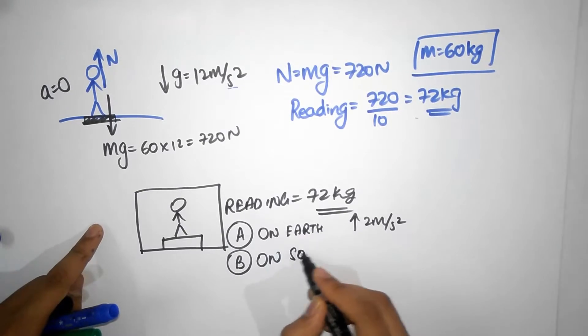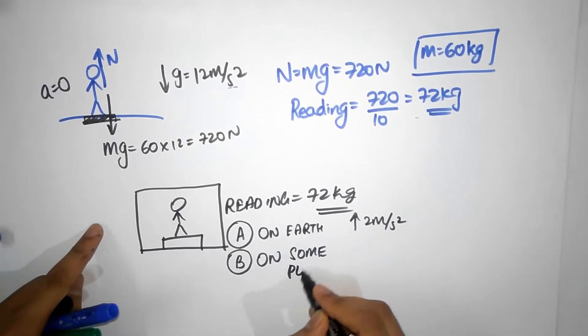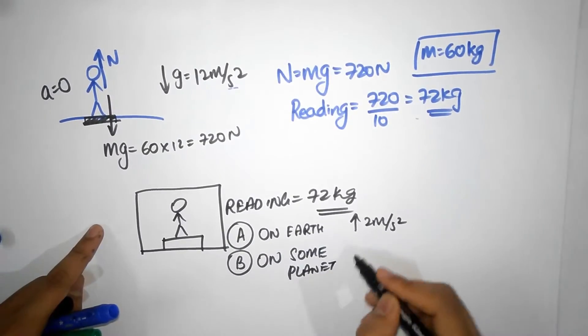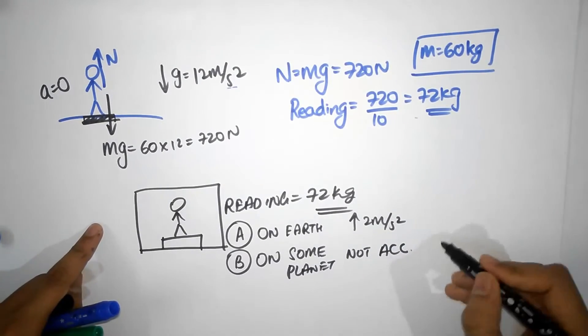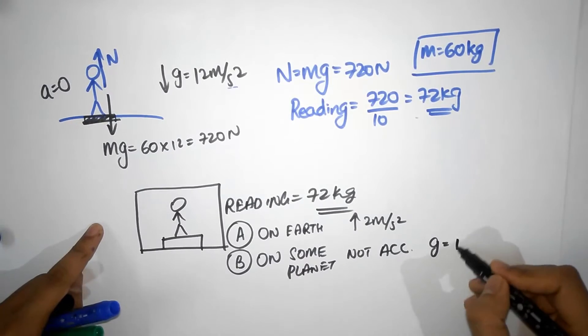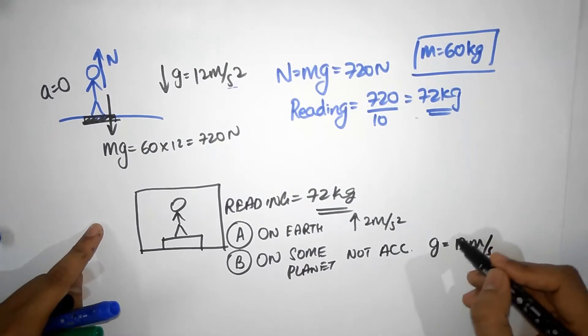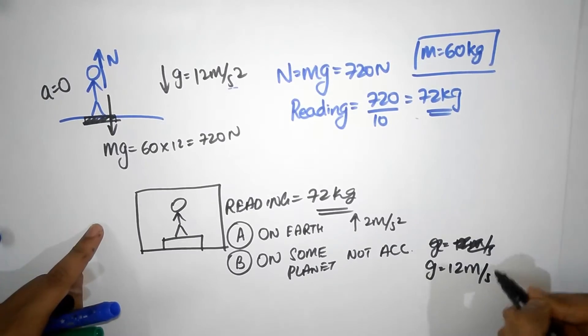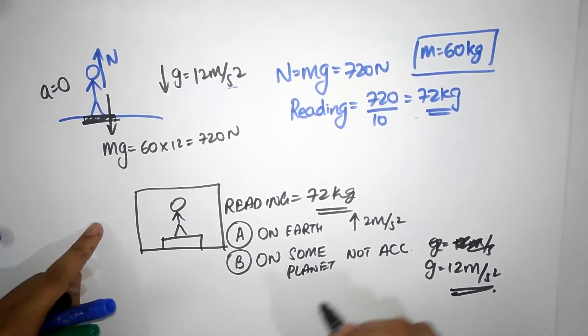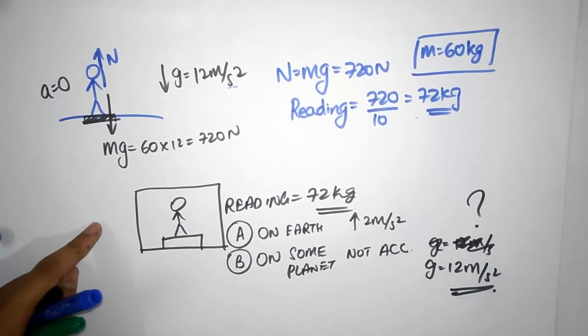It can also mean that you are on some planet, some planet, not accelerating, but the g value on that planet is 12 meters per second squared. This is the 12, g value is 12 meters per second squared.